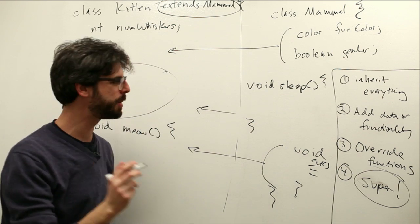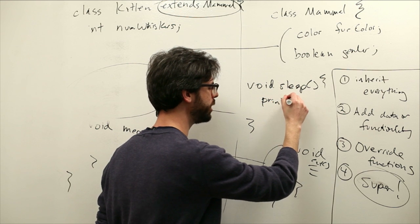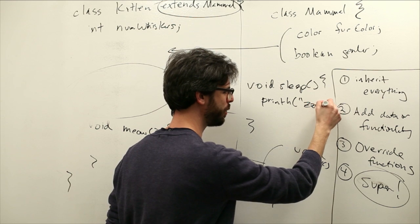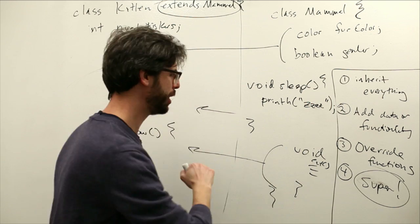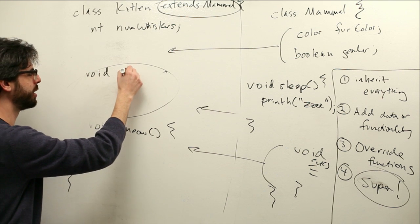I'm going to write the mammal sleep function. And the mammal sleep function just has a print statement in it which says zzzz. Right, you print a bunch of z's. That's what it means for a mammal to sleep, a bunch of z's get printed out on the screen.